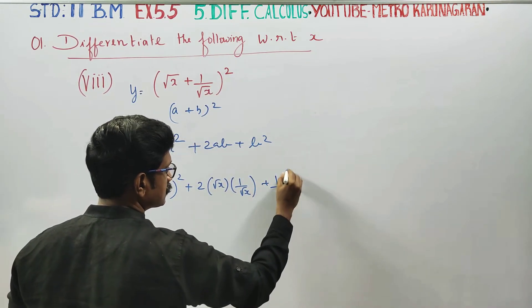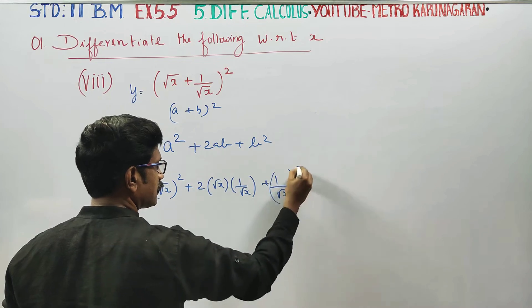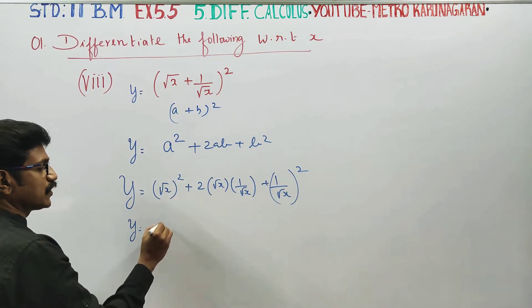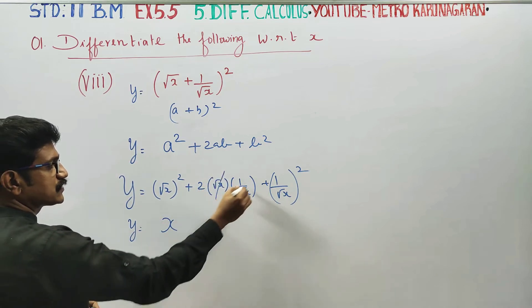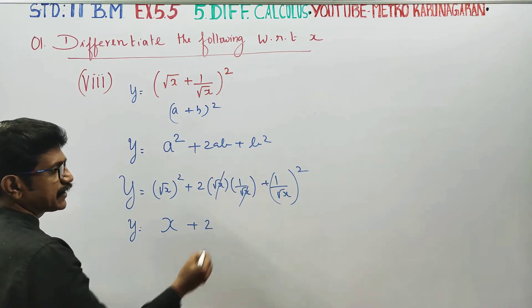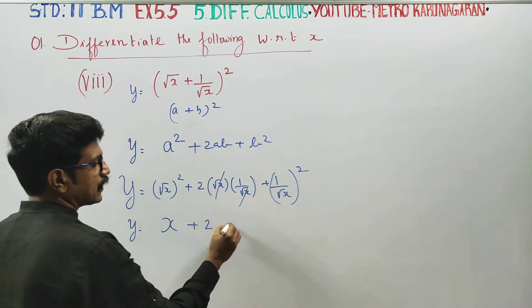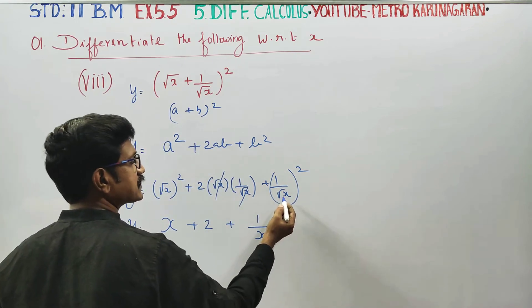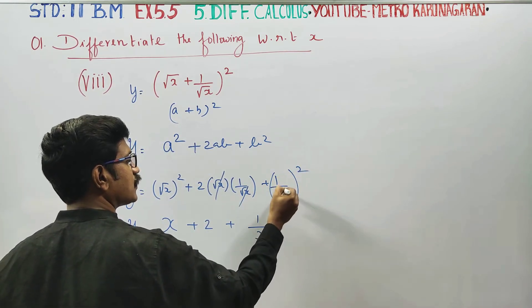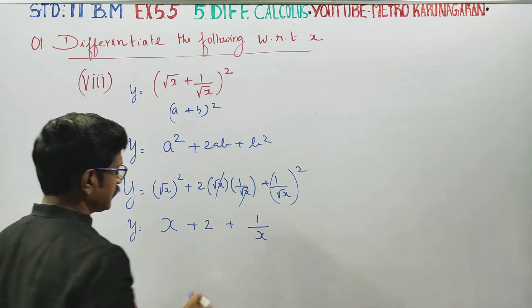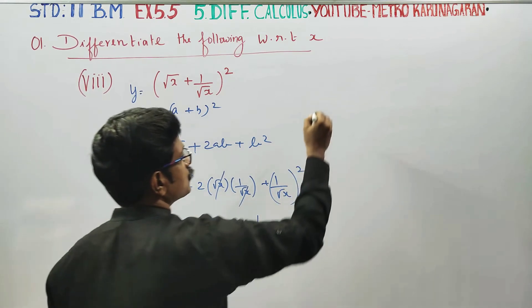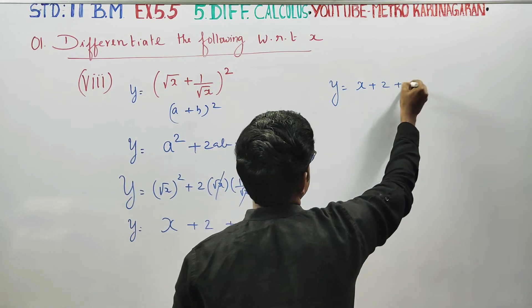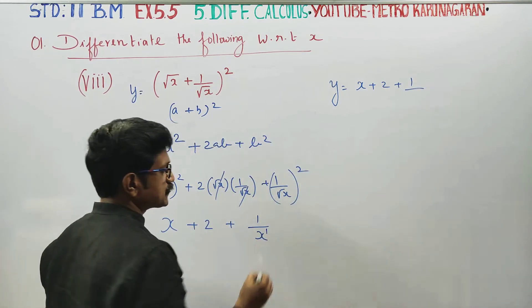Plus 1 by root x, whole square. Next stage, y is equal to — square of square root cancels: root x times root x cancels to give x, and 1 squared is 1. So root x squared is x, and 1 squared is 1.